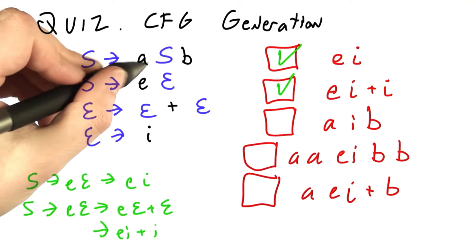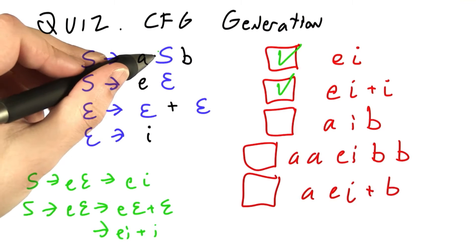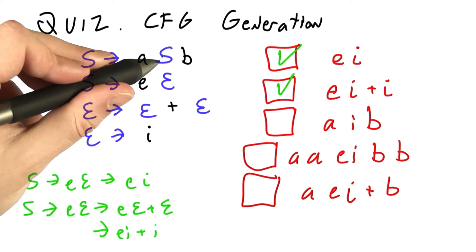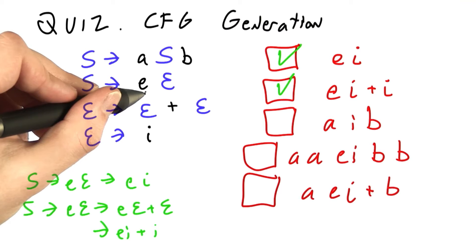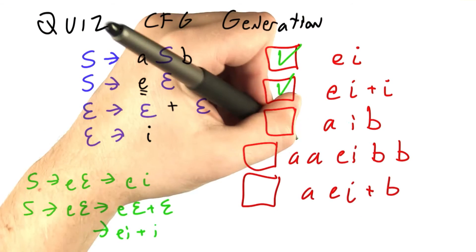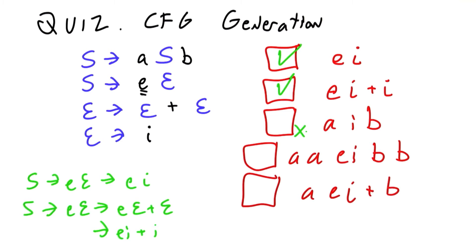Now we have AIB. I can get the A and the B from Rule 1 here, but if I don't want to make more A's and B's, I have to use Rule 2 to get rid of the S, and that requires that I bring in this E. There's no E in this string, so that's not looking good.